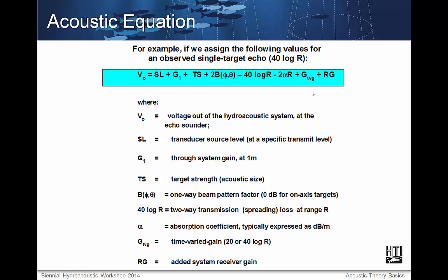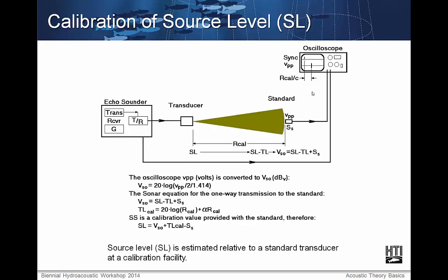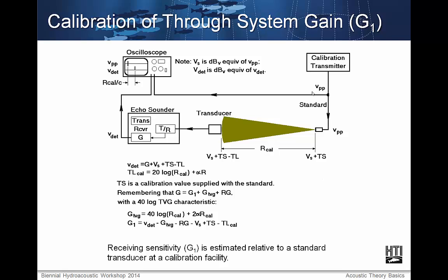The only factors not yet discussed are the through system gain and the source level of the instrument. Both are derived during calibration procedures from the manufacturer. The source level is estimated relative to a standard transducer at a calibration facility, and the receiving sensitivity is also estimated there. HTI does both of these calibrations and recommends a yearly recalibration. However, if great care is taken during sphere calibrations in the field, yearly calibrations at HTI may not be required.